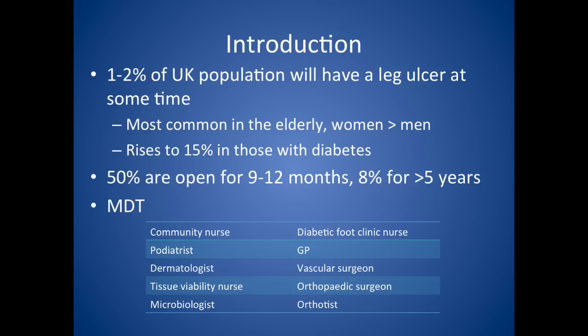About 1-2% of the UK population will have a leg ulcer at some point. It's more common in the elderly, and more so in women than men. The figure rises to about 15% in those with diabetes, so it is a big problem. What is particularly problematic is that they take a while to heal — 50% of leg ulcers are open for about 9-12 months, and 8% are open for over 5 years.